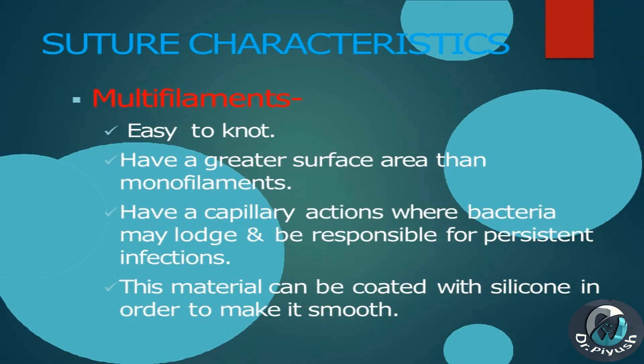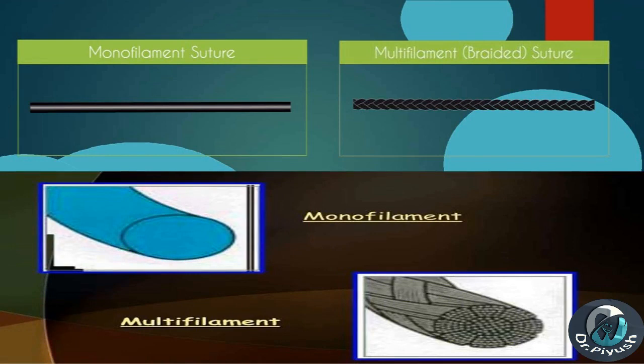Suture Characteristics — Multi-filaments: easy to knot, have a greater surface area than monofilaments, and have capillary action where bacteria may lodge and be responsible for persistent infections. This material can be coated with silicone in order to make it smooth, like a monofilament suture.